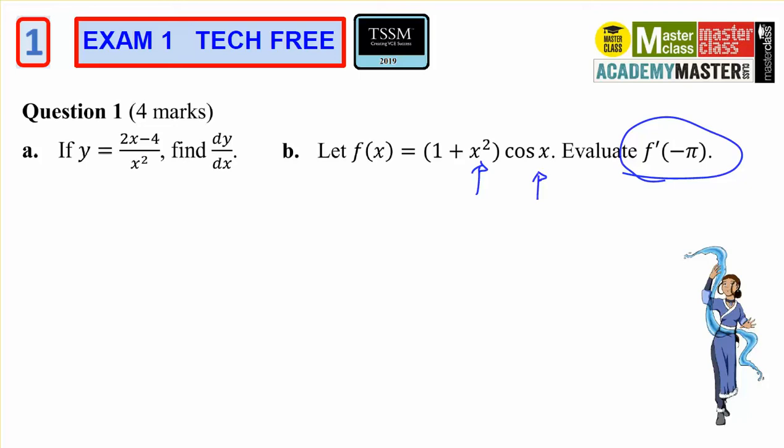So when you use the product rule I don't need to simplify it because then I need to sub in minus pi. So this is my u, this is my v.